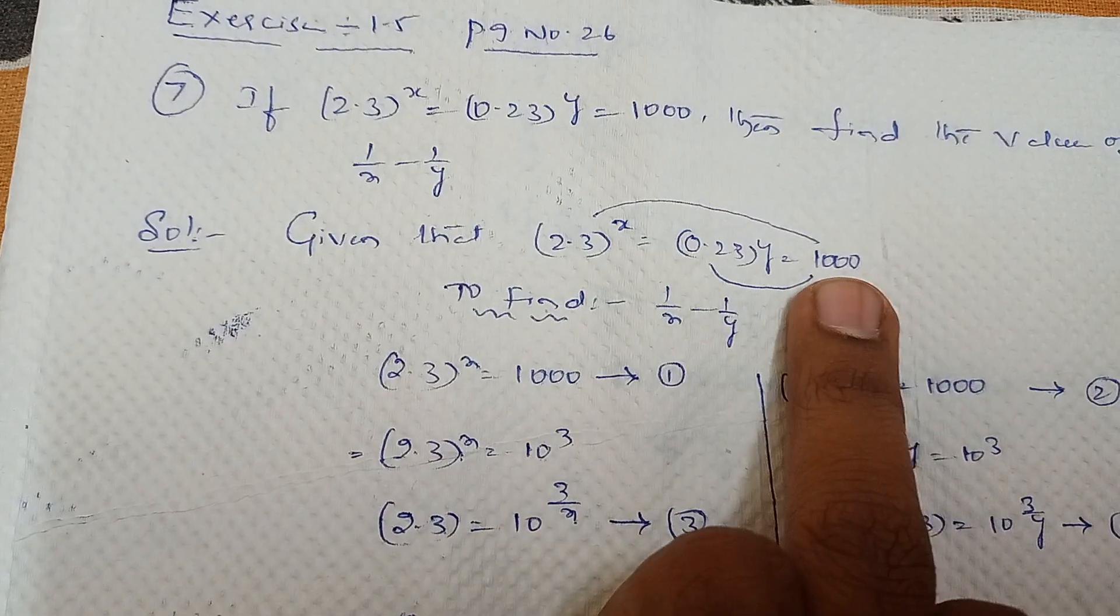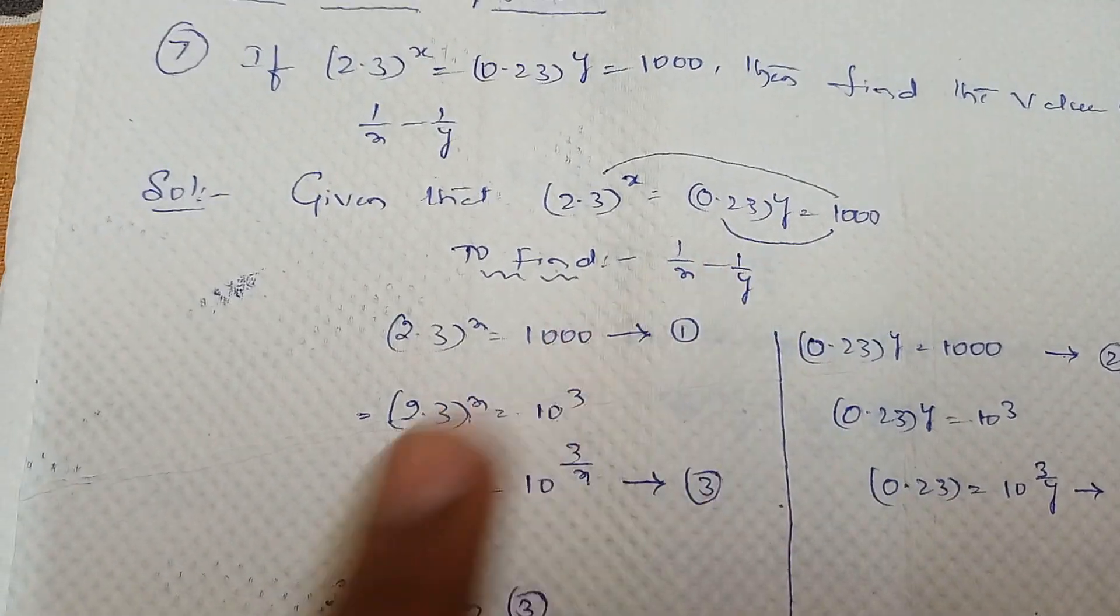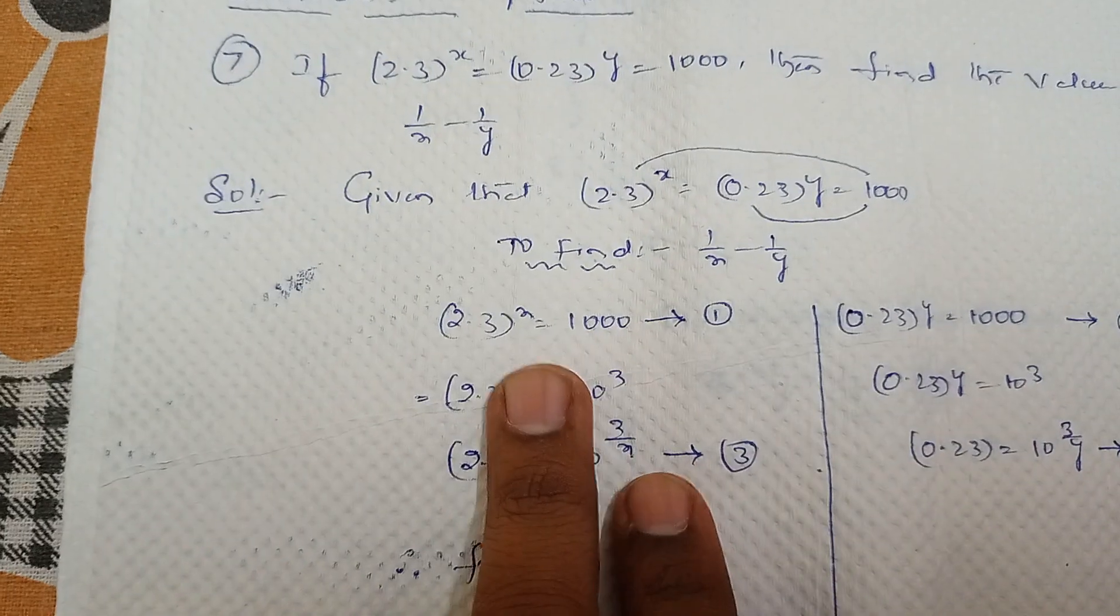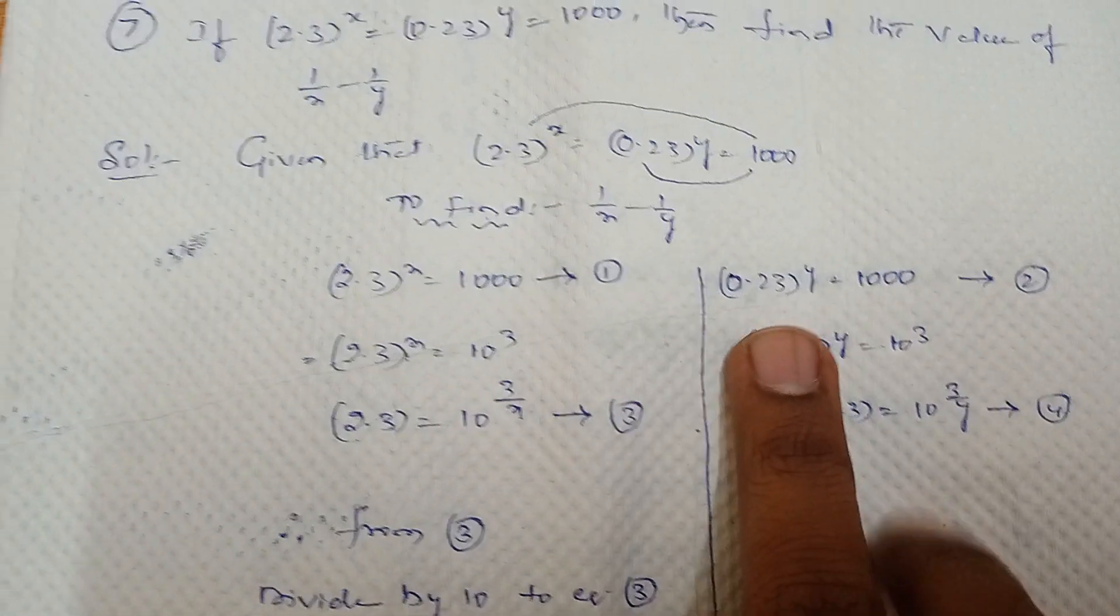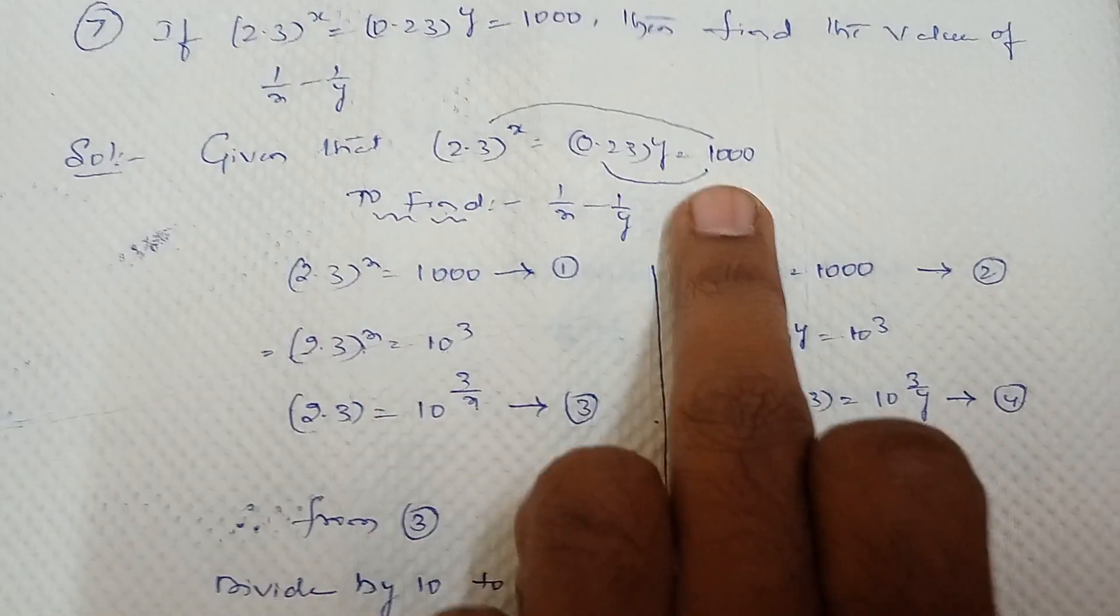We need to equate first term to last term, second term to last term. So I took first term to last term. 2.3 whole power x equal to 1000, that is first equation. 0.23 whole power y equal to 1000, that is second equation.